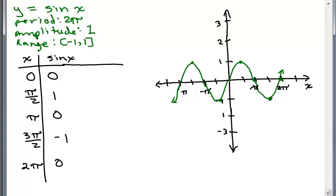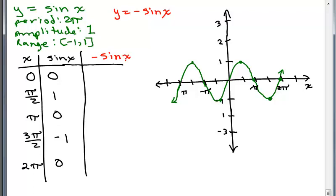So now let's try, instead of Y equals sine X, let's do Y equals negative sine X. The question is, if I put in a value for X, what is the Y value if it's negative sine X? In the second column, we know the values of sine X for these five values of X. So negative sine X would be — we just multiply all those numbers by negative 1. So 0 times negative 1 is 0, 1 times negative 1 is negative 1, 0 times negative 1 is 0 again, negative 1 times negative 1 is positive 1, and 0 times negative 1 is 0.